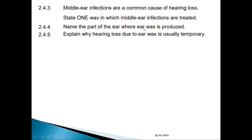Name the part of the ear where ear wax — cerumen — is produced. That is the auditory canal. Explain why hearing loss due to wax is usually temporary: you can remove the wax and then return to normal hearing.